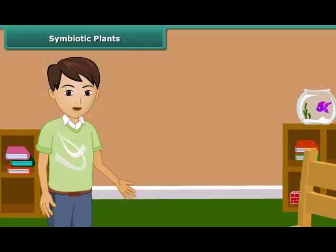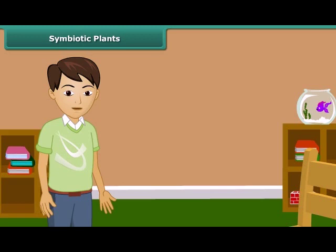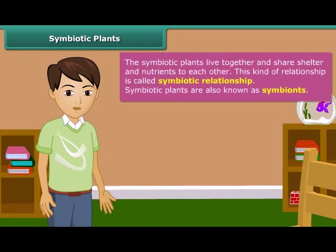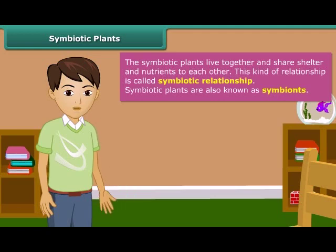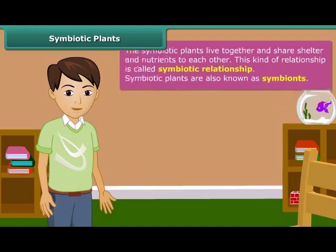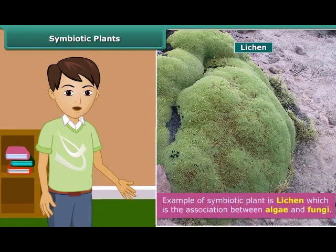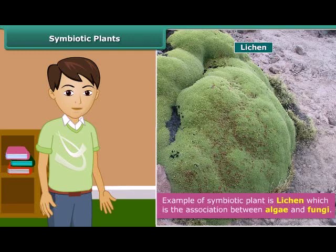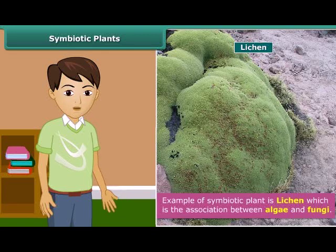Have you ever heard about symbiotic relationship? The relationship between two dissimilar organisms in which both are living together and share shelter and nutrients with each other is called a symbiotic relationship. The organisms involved in this kind of relationship are called symbionts. Lichen is a good example of symbiotic relationship. Lichen is the association between algae and fungi. In this relationship, algae provide food to fungi, and fungi provide protection, absorbed water, and minerals to algae.